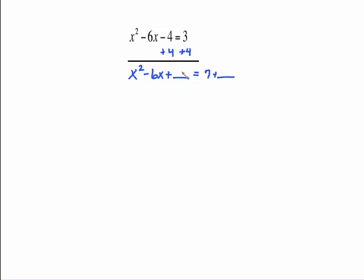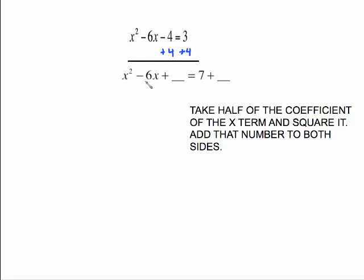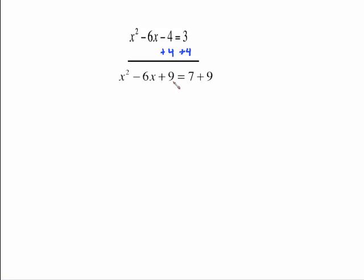We need something in the blank that is the right perfect square to go with 6. The process is simple: take half of the coefficient in front of x and square it. Half of 6 is 3, and 3 squared is 9. Add 9 to both sides. That's all you do to find the appropriate number. 9 is a perfect square because we got it by squaring the half we took — we're just working backwards from the doubling check. So 7 plus 9 is 16, and this is now a perfect square trinomial.